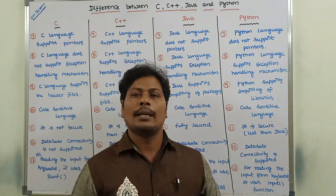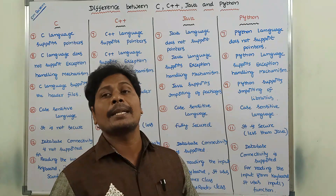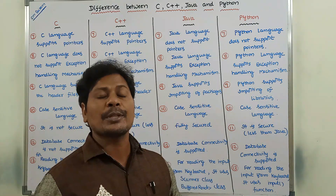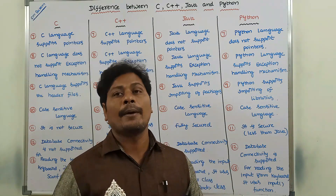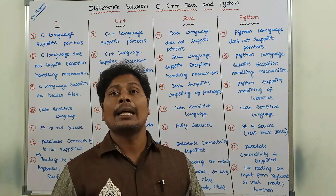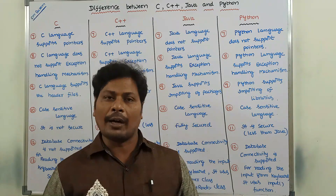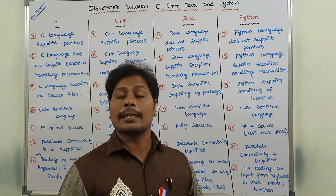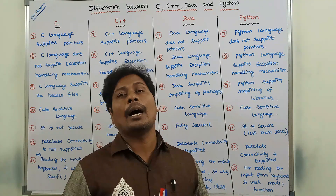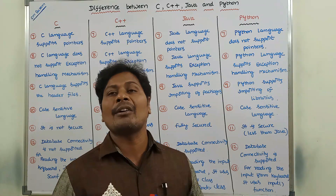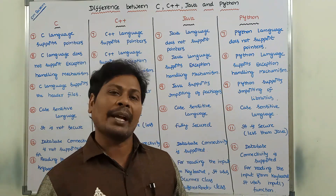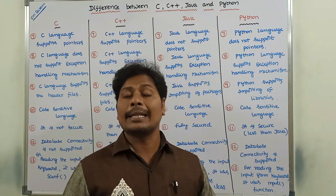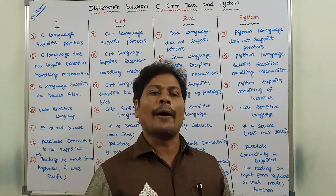Next point: C language is not secure because it uses pointers. C++ language is somewhat secure because of encapsulation and data hiding concepts, but it is less secure than Java. Java is fully secure because it does not support pointers and it supports exception handling and data hiding. Python is also secure but less secure than Java.